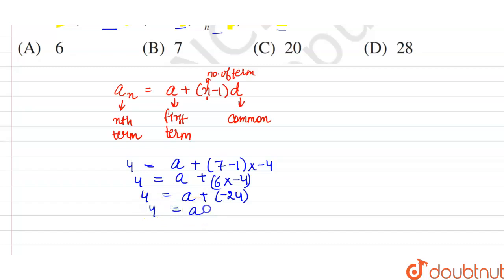Now we are transferring this 24 to the left hand side, so this will be equal to 4 plus 24 is equal to A, so the first term of the series will be equal to 28.